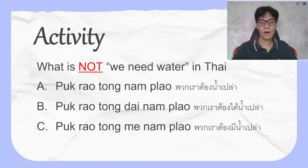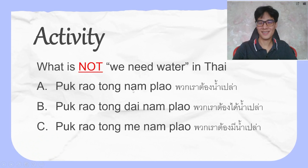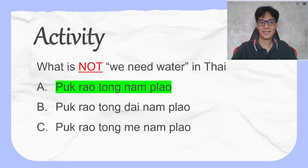What is 'we need water' in Thai? Option A is เราต้องน้ำ. The answer is A — this is wrong. The correct form uses ต้องได้น้ำ or ต้องมีน้ำ.